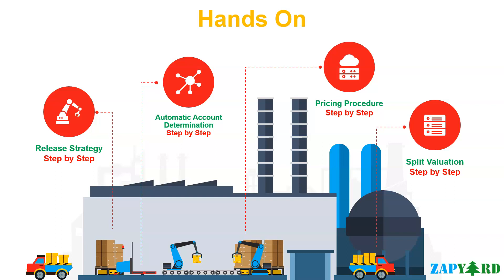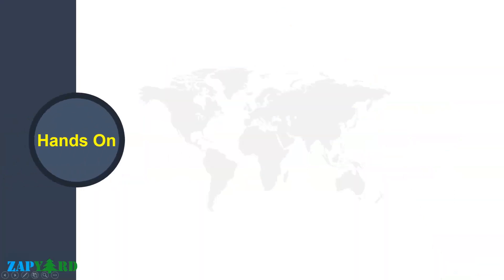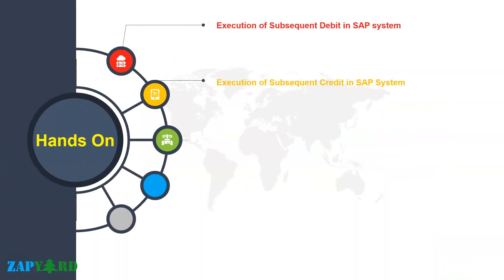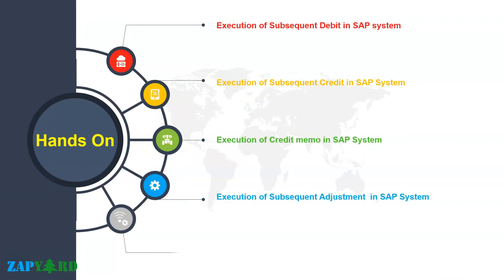Pricing procedure is that niche topic in SAP logistics where you will not find many experts. We will do hands-on exercises on some of these real complex scenarios, which will help all participants in real projects. We will also cover and perform hands-on exercises on split valuation in SAP MM processes. We will dig deeper into the subsequent debit credit execution process and also the credit memo and subsequent adjustment process in SAP logistics. Adjustments and return processes are very practical topics with lots of variants and use cases.